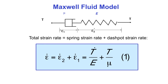In the spring, epsilon 2 is related to t by e, the elastic constant, so epsilon 2 dot equals t dot over e. In the dashpot, t is related to epsilon 1 dot, the rate of strain, by mu, the viscous coefficient — so epsilon 1 dot equals t over mu. Since strain rates add in series, epsilon dot equals t dot over e plus t over mu.